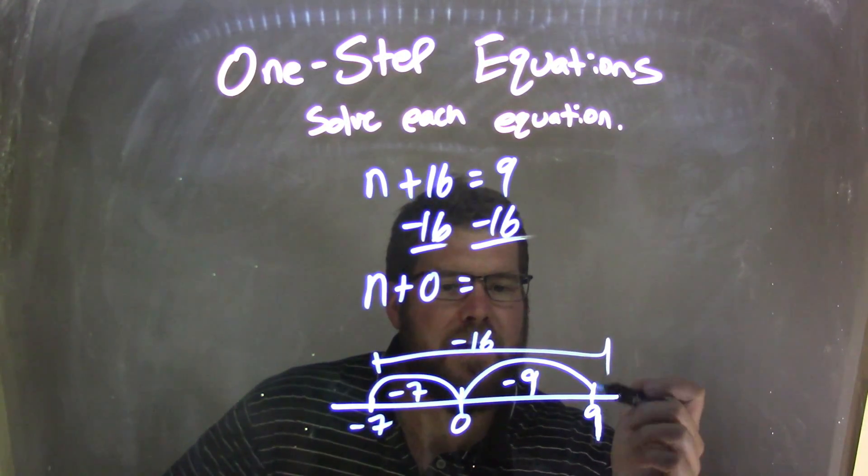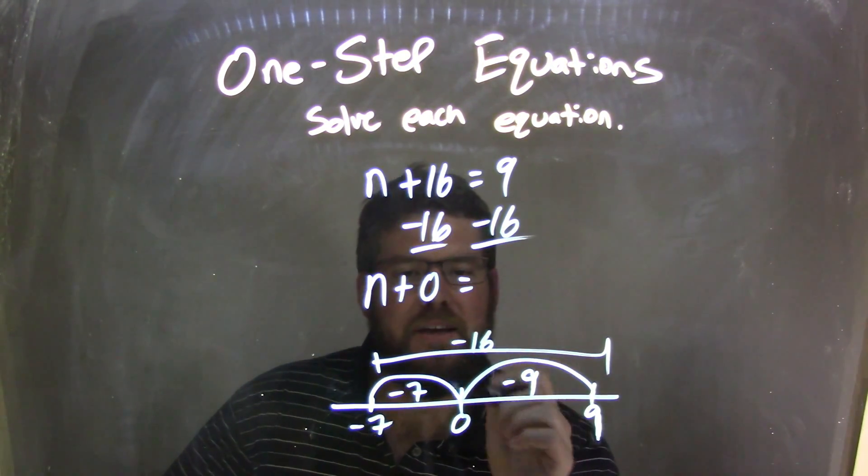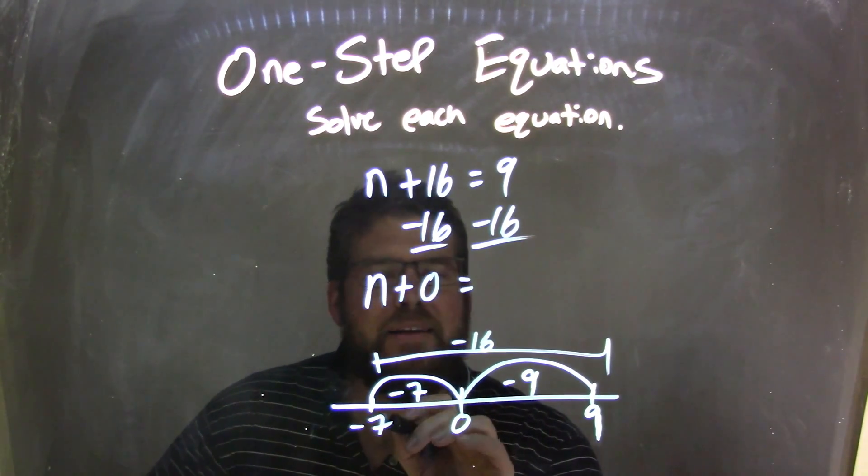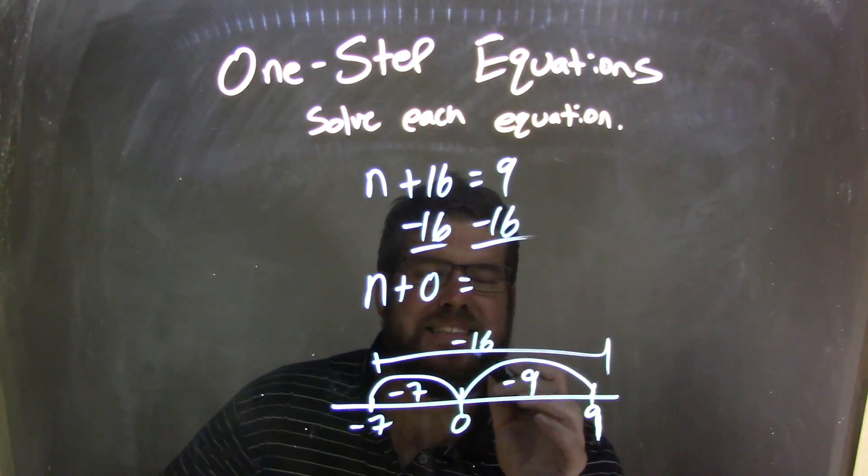So, I took 9, subtract 9 to get to 0. Added another minus 7, which I added together, adds to be 16. So, I subtract 7 more to get to negative 7. Because negative 7 plus negative 9 is negative 16. So, negative 7 here is what 9 minus 16 is.